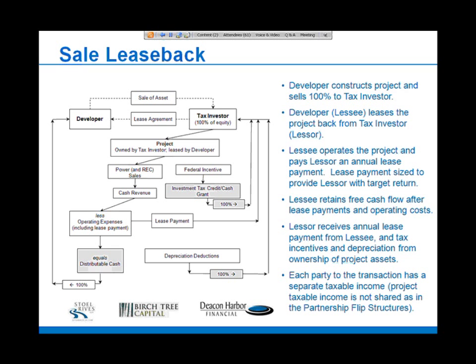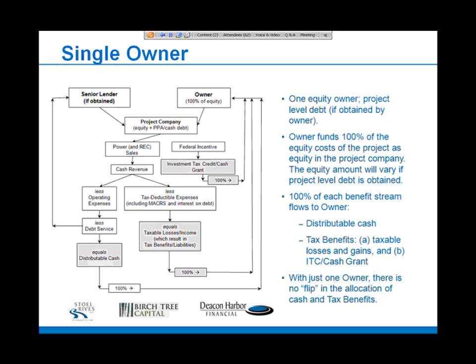Importantly, each party of the transaction has a separate taxable income — they're not grouped together under a project taxable income. The model is developed specifically to account for each of their taxable incomes separately, whereas in the partnership flip we're really trying to maximize value for the project. Within the single owner, there is one equity owner and there may or may not be project level debt. The owner funds 100% of the equity and takes on 100% of the cash and tax benefits, with no flip or other reallocation.